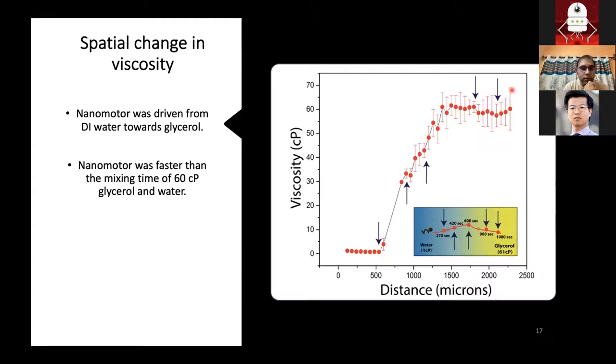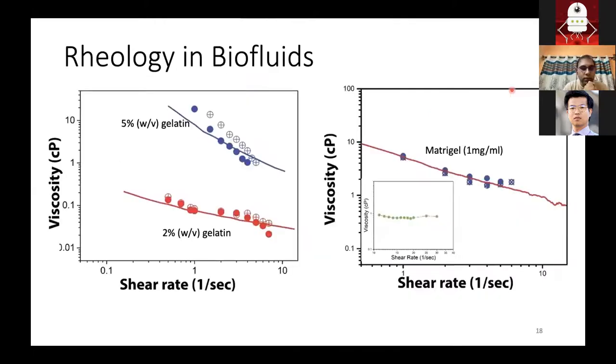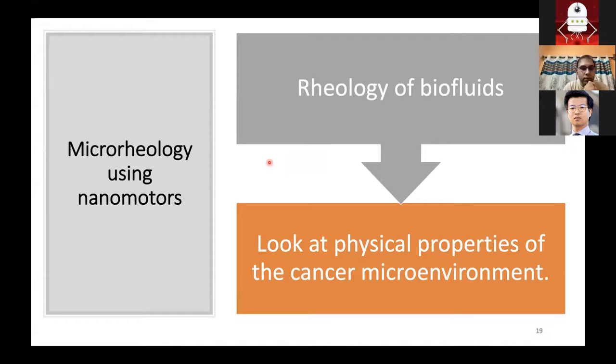With the motion in biofluids and rheology techniques sorted out, we did rheology in two very important biofluids. One of them is gelatin, which is denatured collagen. The other one is matrigel, a name for the basement membrane material that is sold. We saw that we could get some shear thinning property out of these two fluids. With this sorted out, we set out to look at the physical properties of the cancer microenvironment. Why do we want to look at the cancer microenvironment?